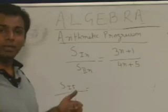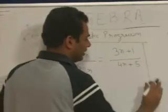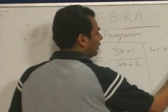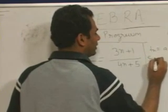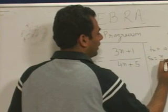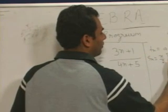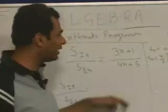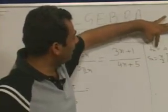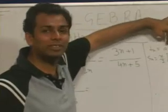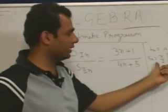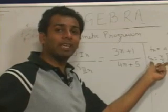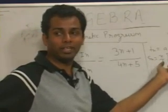Always remember: the nth term is equal to a + (n−1)d, and the sum of n terms is equal to n/2 × [2a + (n−1)d]. The nth term is a linear equation in n, but the sum of n terms of an AP is always a quadratic equation.